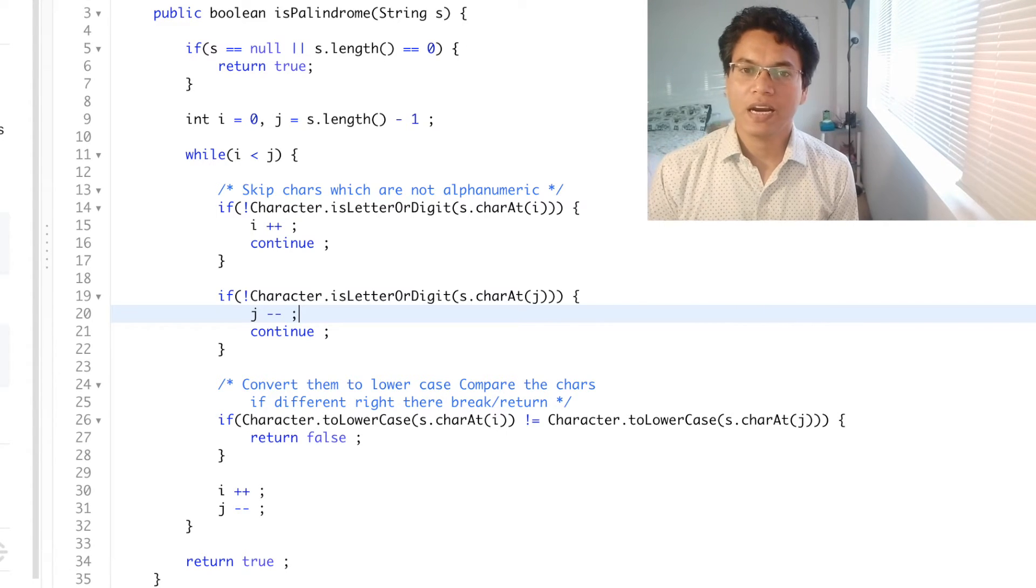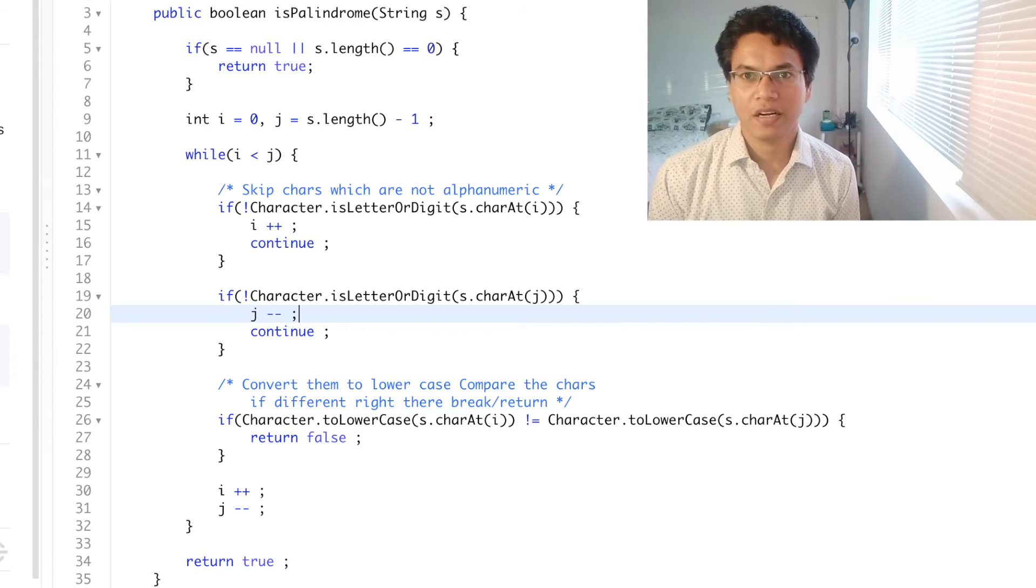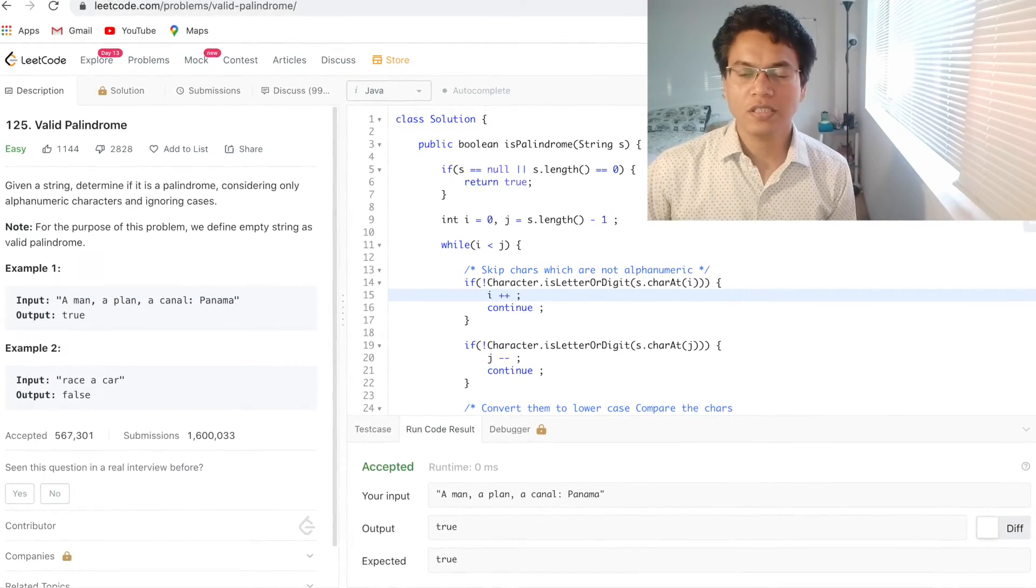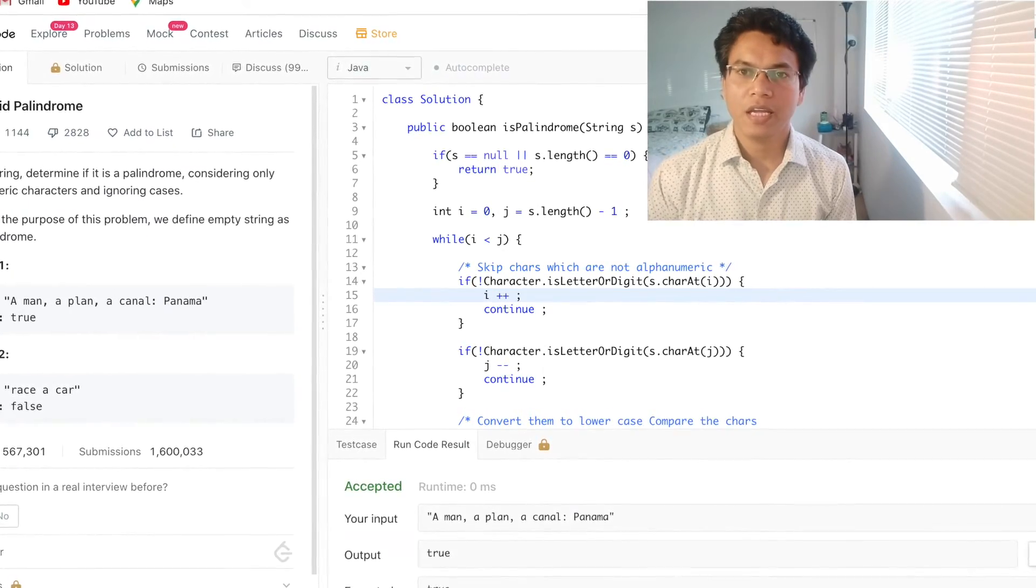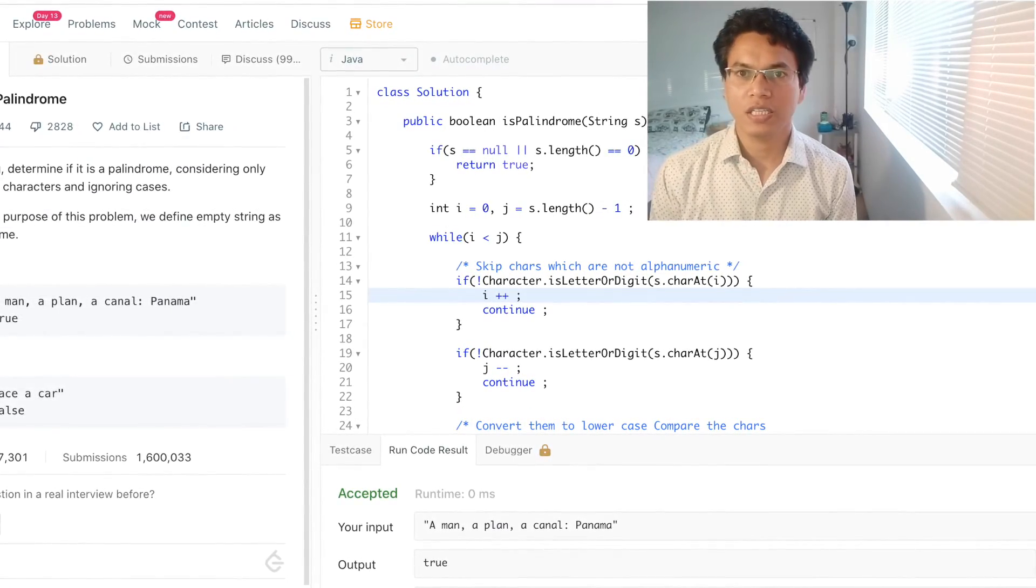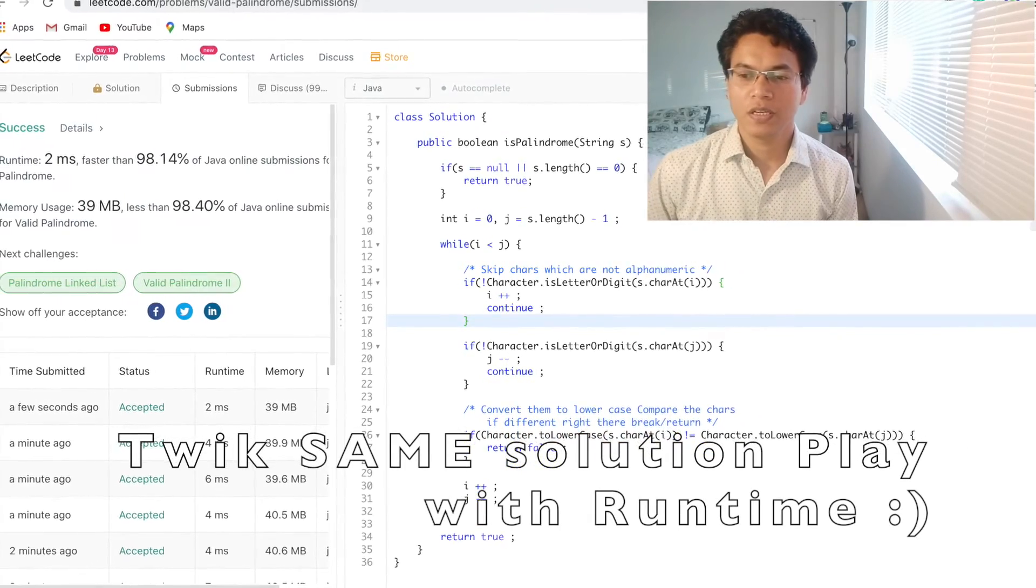In the next step, convert the characters to the lower case. Convert the character at i and j to lower case and compare. If they are not matching, then return false immediately. We continue doing this process until i is less than j. And finally, if we have not returned false in this while loop, this is a palindrome and we will return true. So that's the solution.